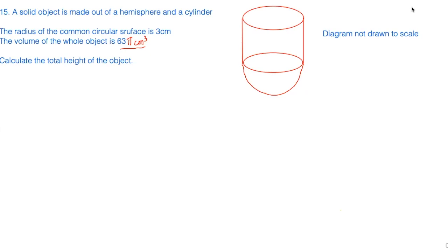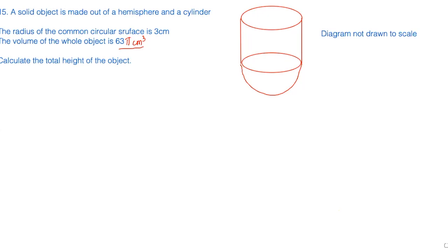So this is question 15 in your paper 1, 2021 November. It's higher tier and it's in math paper. The question tells you that a solid object is made out of a hemisphere and a cylinder. The diagram is not drawn to scale, so you're not going to measure anything on there. The radius of the common circular surface is three centimeters. So this bit here is three centimeters, and this bit here is also three centimeters.